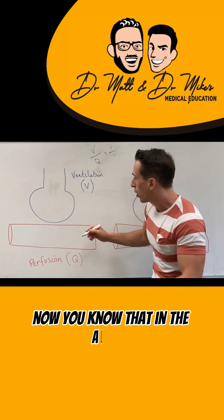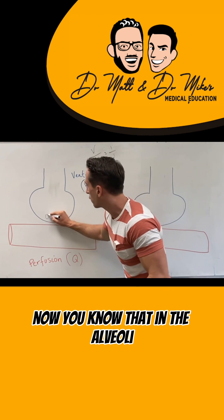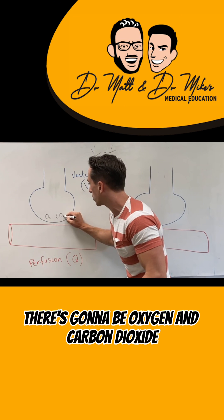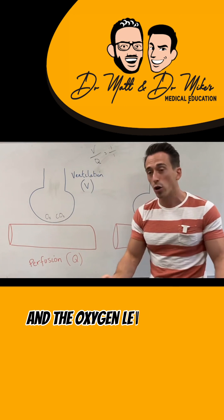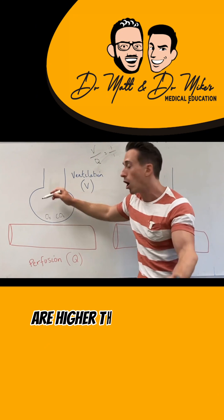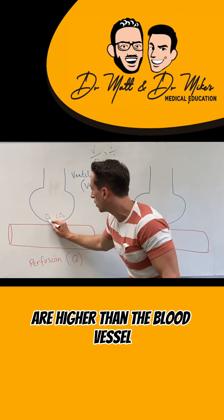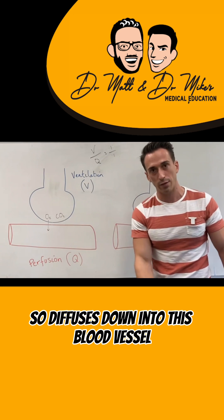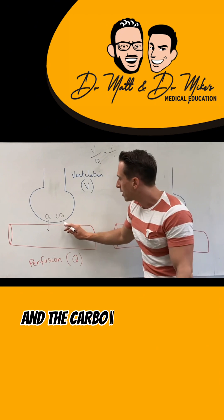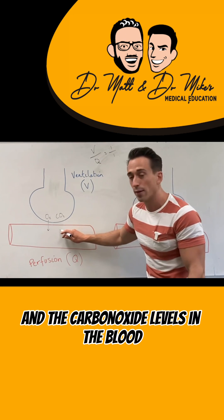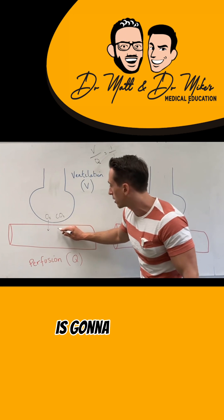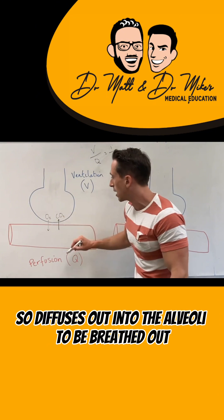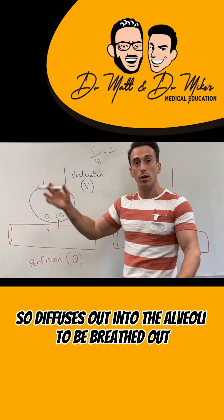In the alveoli there's going to be oxygen and carbon dioxide. The oxygen levels in the alveoli are higher than in the blood vessel, so it diffuses down into the blood vessel. The carbon dioxide levels in the blood are higher, so it diffuses out into the alveoli to be breathed out.